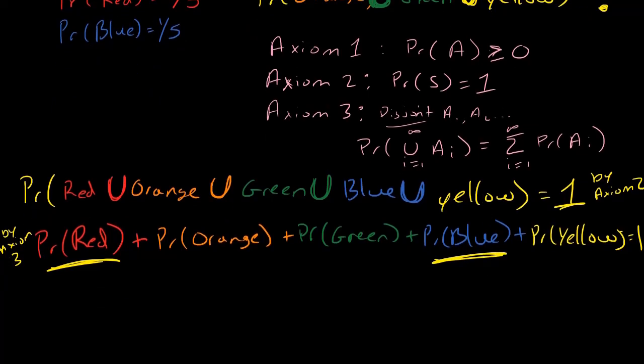I have 3 fifths plus the probability of orange plus the probability of green plus the probability of blue, which is 1 fifth, so I can plug that in, plus the probability of yellow equals 1. And so at this point, I can do some algebra.